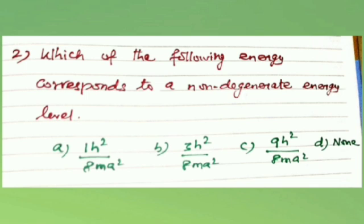Another question: which of the following energy levels corresponds to a non-degenerate energy level? The non-degenerate case occurs when nₓ = nᵧ = n_z, for example (1,1,1), where 1² + 1² + 1² = 3 gives a single unique state. That is the non-degenerate energy level answer.